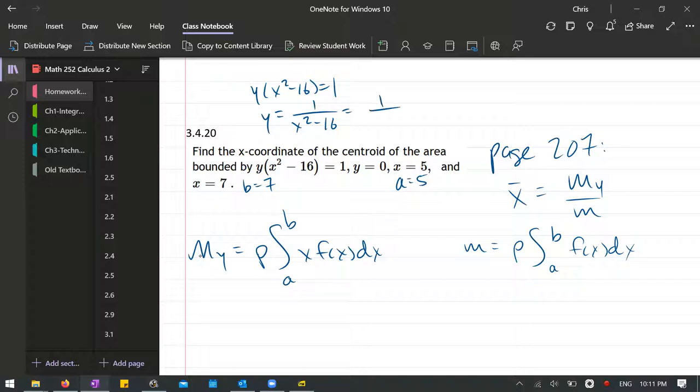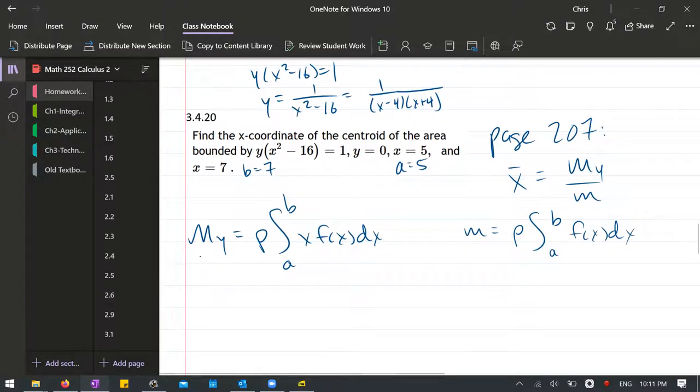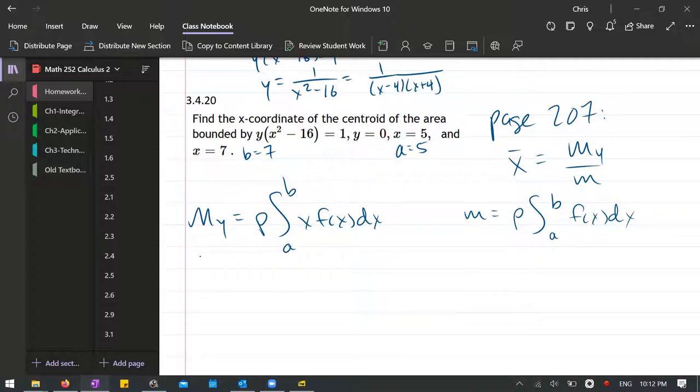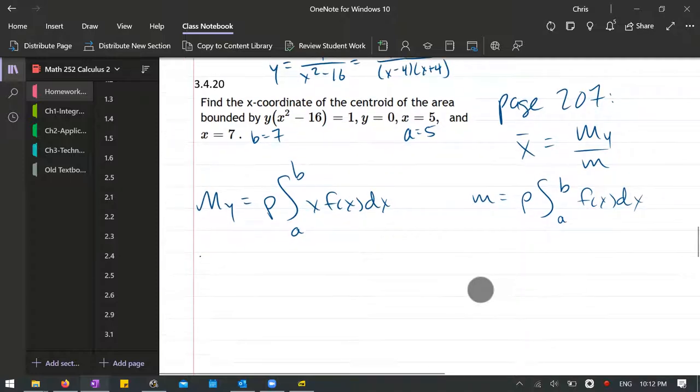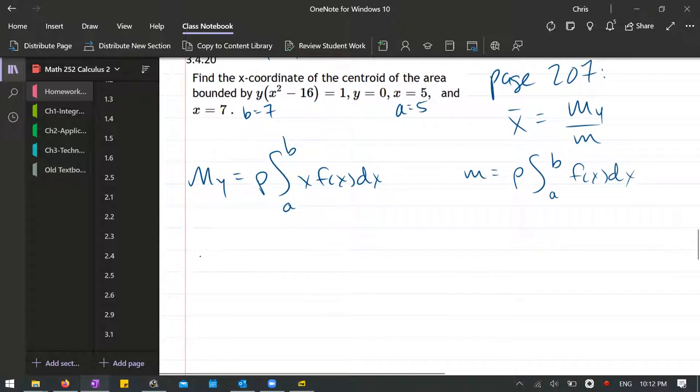And of course, we can write that as factored, x minus 4, x plus 4. And that is a difference of squares, also known as conjugate factoring.